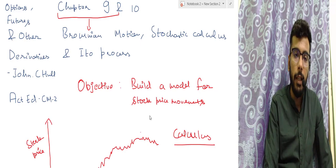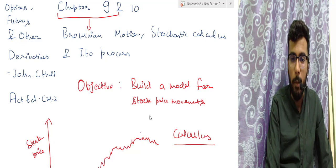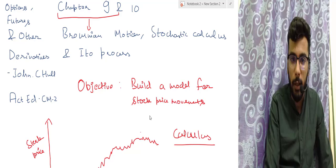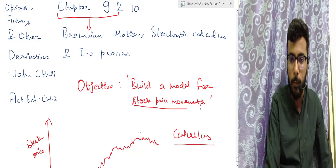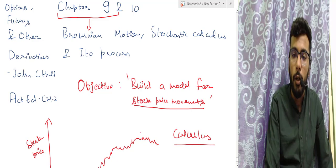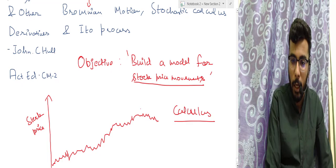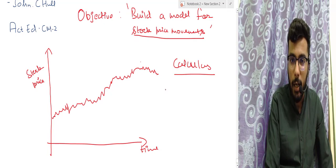The objective here is to build a model for the stock price movement. That will be our objective with these two chapters — we will try to model the price of a stock. These models will later be used in further chapters to build the Black-Scholes option pricing formula. So there is a lot of application of this chapter.